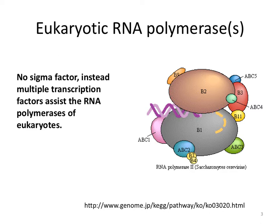Another point while looking at this picture of an RNA polymerase: in eukaryotes, they do not have the subunit referred to as sigma factor. Instead, the role of sigma factor is accomplished by additional proteins that we refer to as transcription factors.